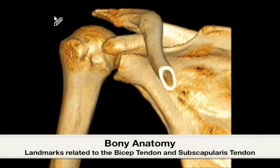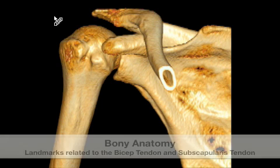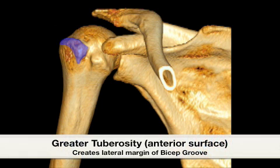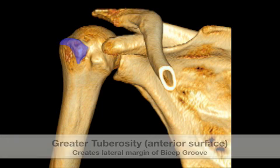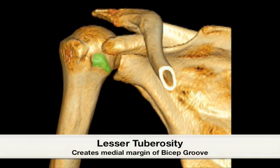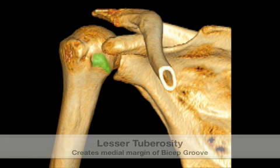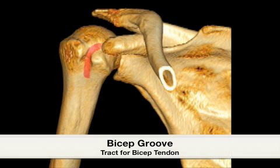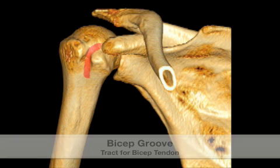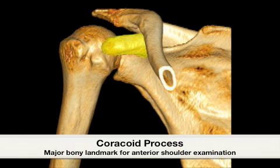We'll begin by describing bony anatomical landmarks associated with the anterior shoulder. First, we have the greater tuberosity located lateral to the bicipital groove. Next, we have the lesser tuberosity located medial to the bicipital groove. And finally, we have the bicipital groove itself, which is a tract for the bicep tendon. Also, a major bony landmark associated with the anterior shoulder, especially in dynamic studies, is the coracoid process.